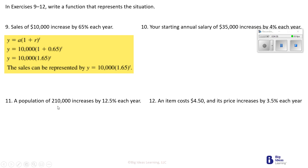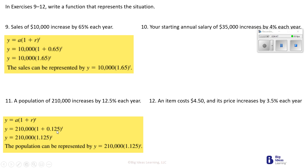Number 11 says a population of 2,100 increases by 12.5% each year. When we move the decimal back, it's going to be 0.125. We add that to 1, which is 1.125. So our formula will be 2,100 times 1.125 to the T power.